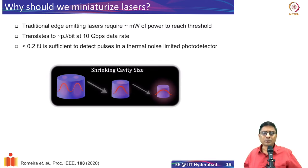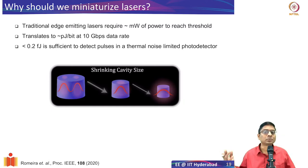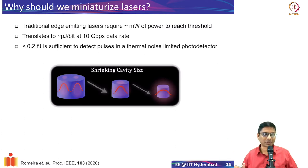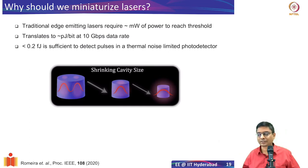But is it really required to spend that much energy? It turns out that a photodetector can actually detect pulses with as low as 0.2 attojoules of energy — a very very small amount of energy required to actually detect pulses if you have a thermal-noise-limited photodetector. But because the laser has a very high threshold, we are forced to transmit energy at that higher range.